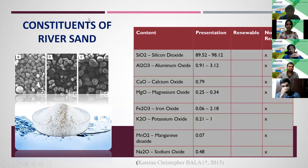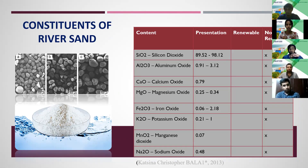Let's look at the ingredients of river sand. Silicon oxide makes up 93%, aluminum oxide 2%, and the remaining components are magnesium oxide, calcium oxide, ferric oxide, and potassium oxide. These are all non-renewable ingredients.